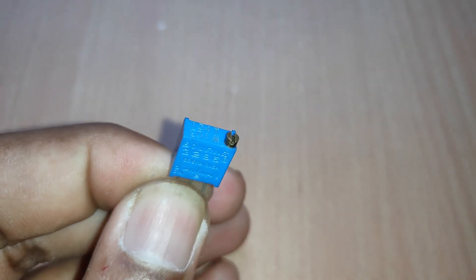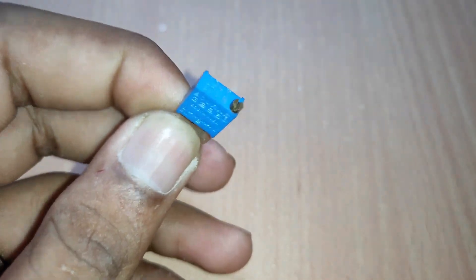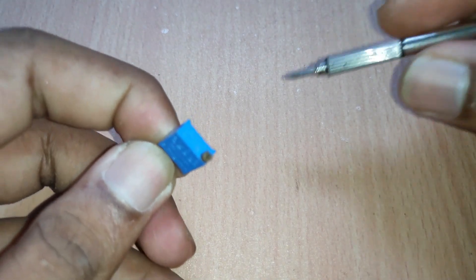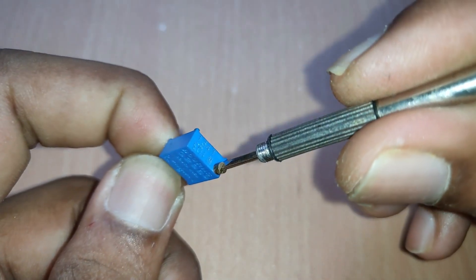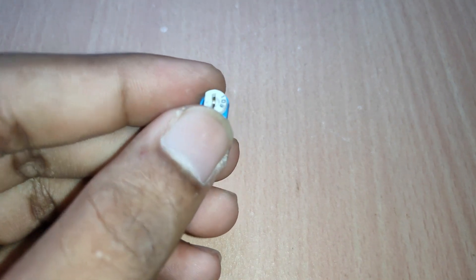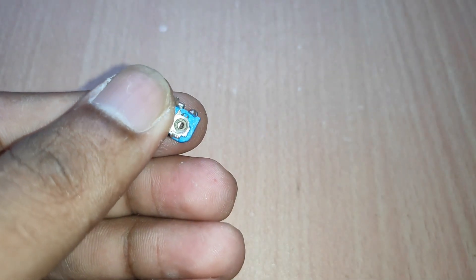This potentiometer comes in various sizes and shapes. This one is a multi-turn potentiometer, which gives precise value of resistance since its name itself says multi-turn. This one is a trim pot, which also does the same function but smaller in size.